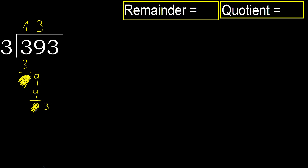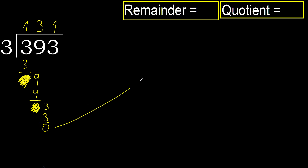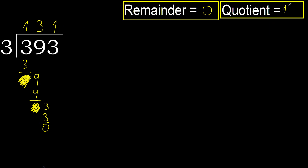Next, bring down and eliminate 3. 3 multiplied by 1 is 3. Subtract. Next, there is no number remaining, therefore finish it.